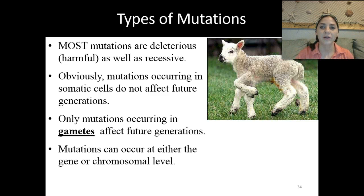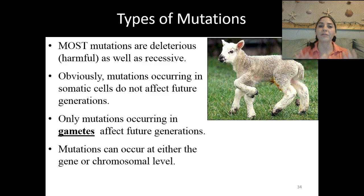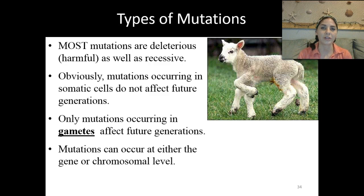Mutations occurring in somatic cells do not affect future generations. Somatic cells are our body cells, so mutations that occur in our body cells aren't going to affect future generations — my skin is not going to be reproducing. However, sex cells — eggs or sperm — those are your gametes. If a mutation occurs in one of your gametes, that can get passed on to the future generation. Occurs in a somatic or body cell, it's not going to get passed on. If it occurs in a gamete, it can get passed on.